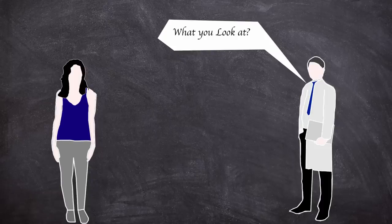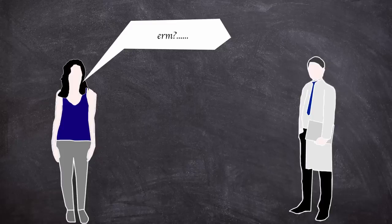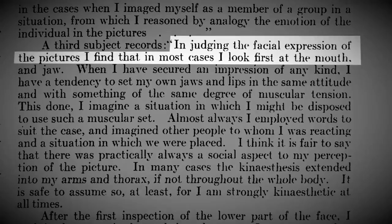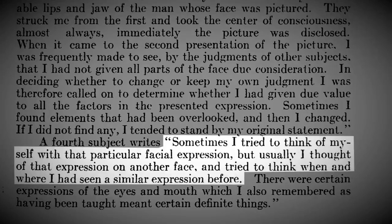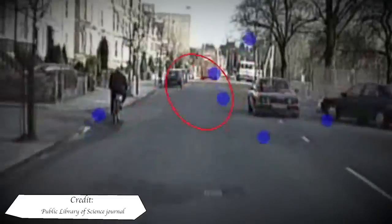In post-experiment interviews each subject was asked where do they look first when judging a facial expression, and interestingly each gave slightly different answers. For example, one person stated they stared at the mouth first and another saying that they tried to imagine themselves with that expression and how it would make them feel. Of course modern day eye tracking experiments are more reliable at seeing what we look at first, but Langfield's experiment is interesting to see the thought processes of the subjects as they examine the images presented to them.